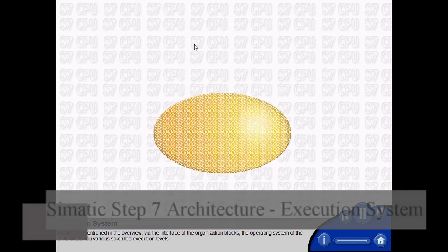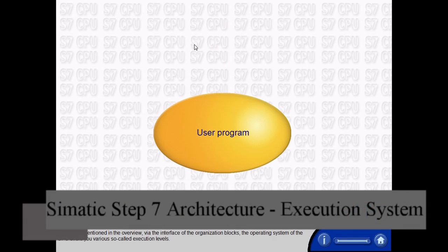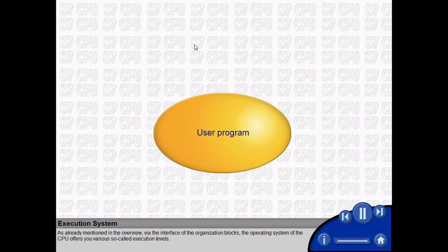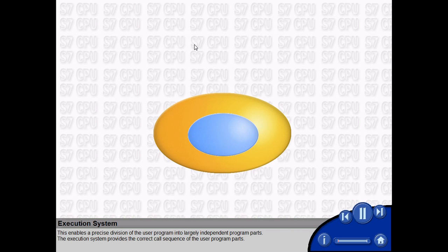As already mentioned in the overview, via the interface of the organization blocks, the operating system of the CPU offers you various so-called execution levels. This enables a precise division of the user program into largely independent program parts.